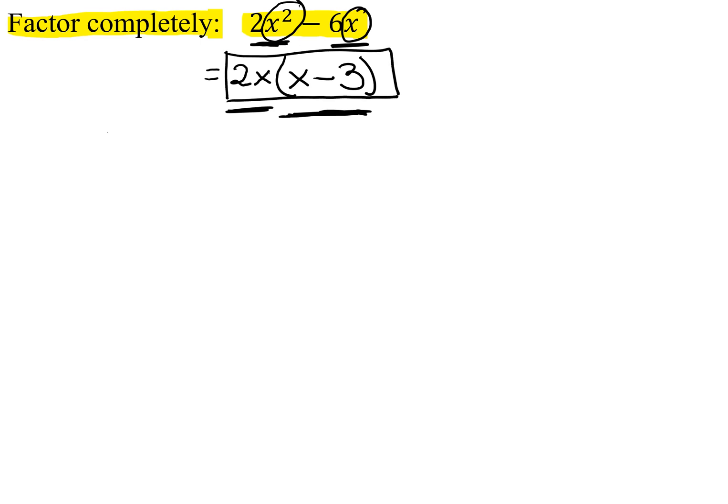So our final answer is 2x times the quantity x minus 3. Remember, any factoring problem can be checked. In this case, you just distribute the 2x into the binomial x minus 3 to see if you landed up with the original problem.